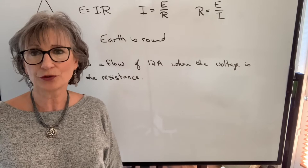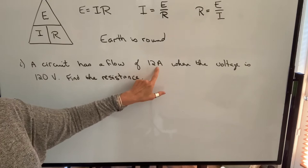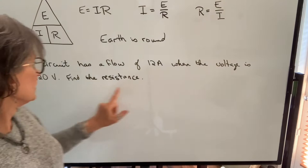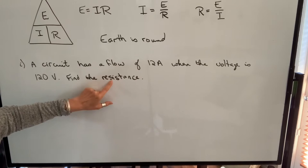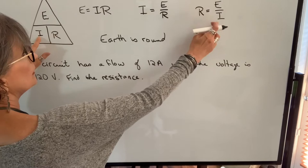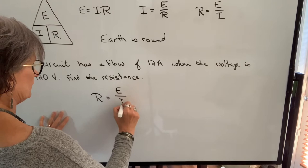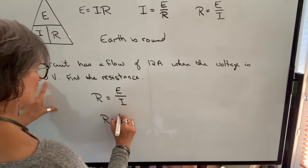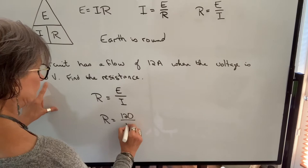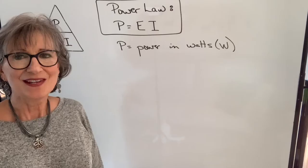For example, if we know a circuit has a flow of 12 amperes, so we know that the current is 12. When the voltage is 120 volts, find the resistance. If we're going to be finding the resistance, remember R is equal to E divided by I. So that's the formula I'm going to use. I plug in the values that I know. I know that the voltage, which is E, is 120. I know the current is 12. So resistance will be 120 divided by 12, which is 10. And resistance is measured in Ohms.